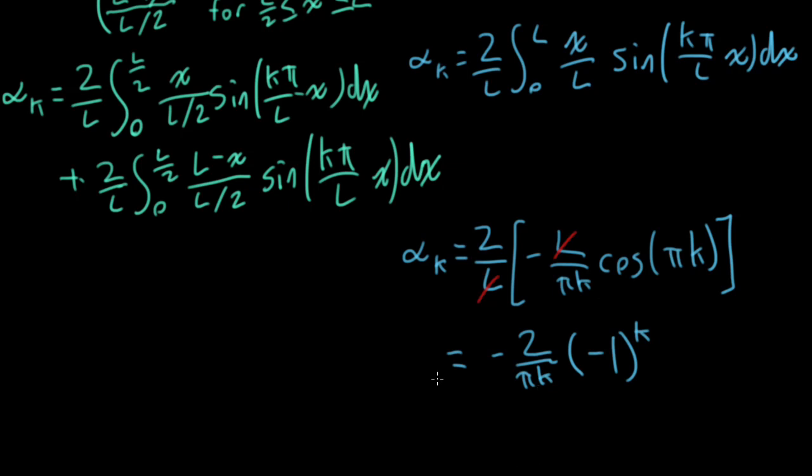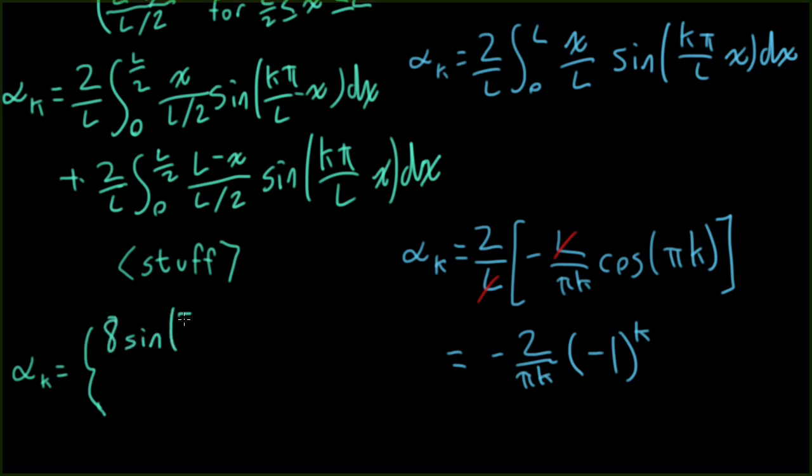All right, so what about example one, where we started with a triangular shape? Well, I'm going to do something I generally don't like to do, which is to say you do a bunch of stuff. You can type all of this into Wolfram Alpha. You can do integration by parts yourself. You do a soul-crushing amount of algebra. You make some simplifications based on the fact that you know that k is an integer, and you eventually wind up with this. You wind up with 8 sine pi k over 2 times x over pi squared k squared for odd k, and you wind up with zero for even k.